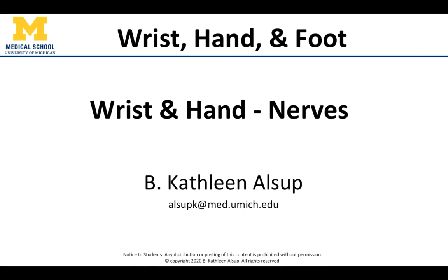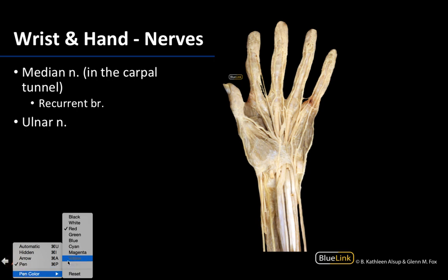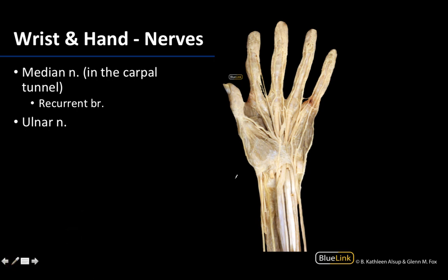We are going to discuss some of the nerves that are easily identifiable in the hand. Specifically, we're going to focus on some of the efferent nerves that you can actually see. We are looking at a palmar view, or an anterior view, of the hand.